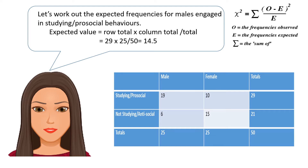So let's work out the expected frequencies for males engaged in studying or pro-social behaviours. The expected value is going to be the row total times the column total divided by the overall total. For males studying or engaged in pro-social behaviours, the row total is 29. The column total for males studying is 25, and the overall total of people in the study is 50. So the expected frequency is 29 times 25 divided by 50, which equals 14.5.